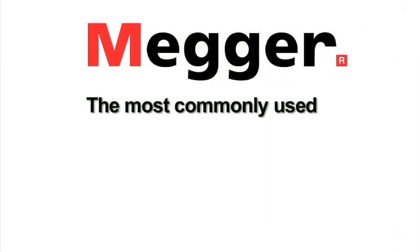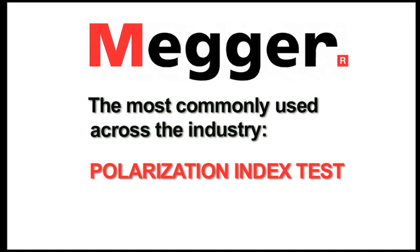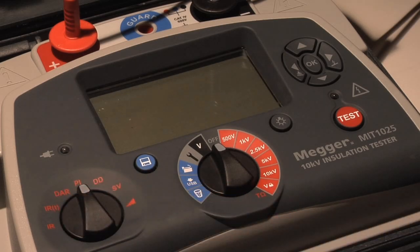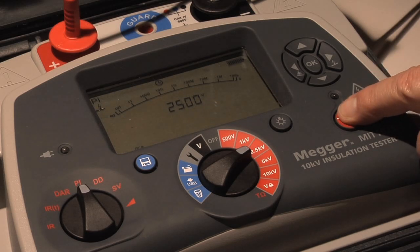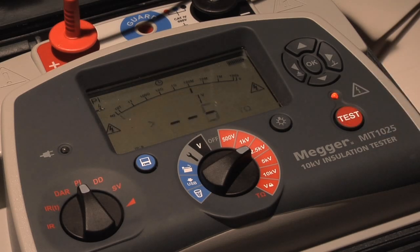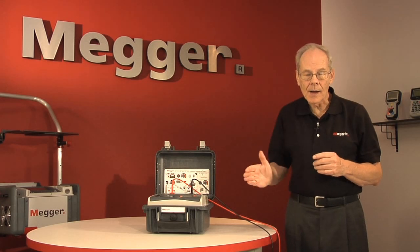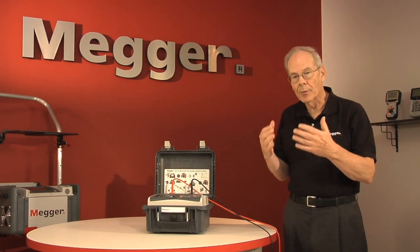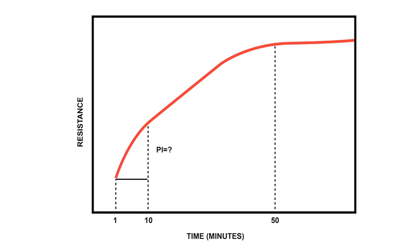The most commonly used test across the industry is the polarization index, which by definition is a one-minute ratio into a ten-minute ratio. The selector switch position goes to PI, you select your test voltage, begin the test, and start making measurements. At the conclusion of the test, the tester will automatically stop, but the critical information will remain on the display. It will show you the resistance reading and leakage current at time one and at time two, which in the case of a PI is ten minutes.